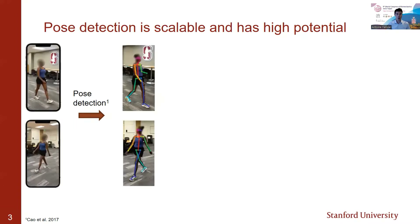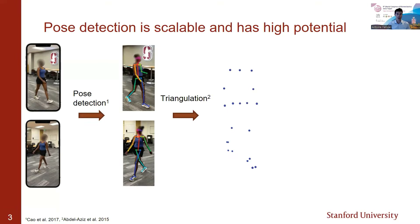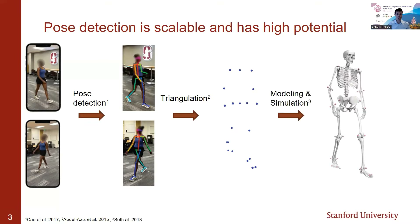One approach to estimate joint angles from videos is to record videos from multiple views, to process those videos using a video pose detection algorithm like OpenPose, to use triangulation to reconstruct the 3D trajectories of the identified video keypoints, and finally to use a modeling and simulation software like OpenSim to run inverse kinematics and estimate joint angles.